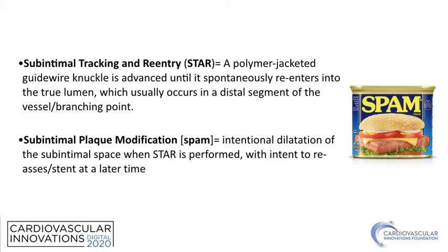One way out of this is to perform sub-intimal tracking and re-entry, whereby a polymer-jacketed guide wire is knuckled in the sub-intimal space and advanced until it spontaneously enters into the true lumen, which usually occurs at the distal segment at a branching point. When this technique was originally described, the success rates were pretty high. However, immediate stenting after this resulted in poor patency at follow-up, primarily due to very poor outflow and loss of many side branches from this extensive dissection.